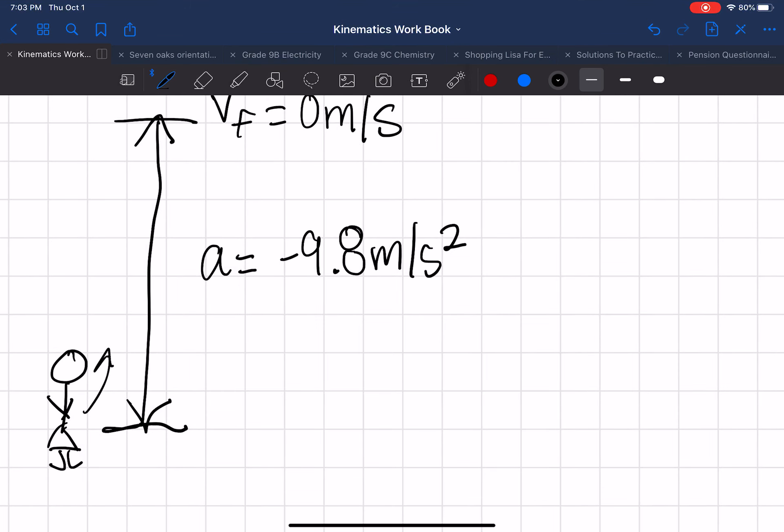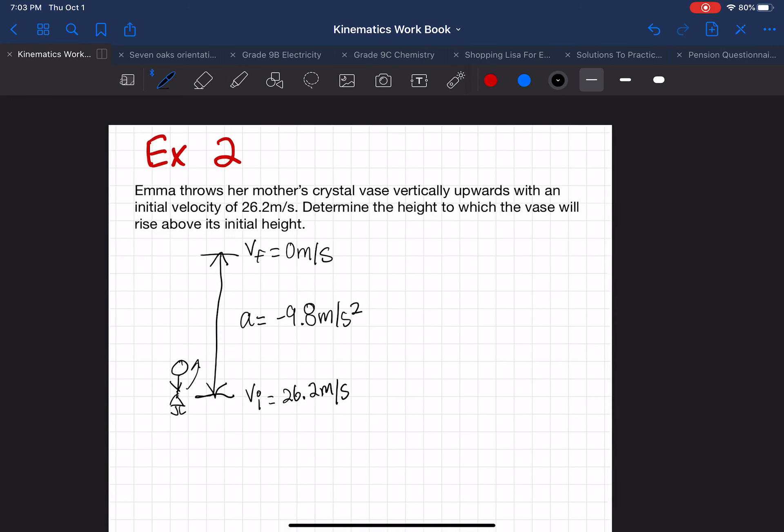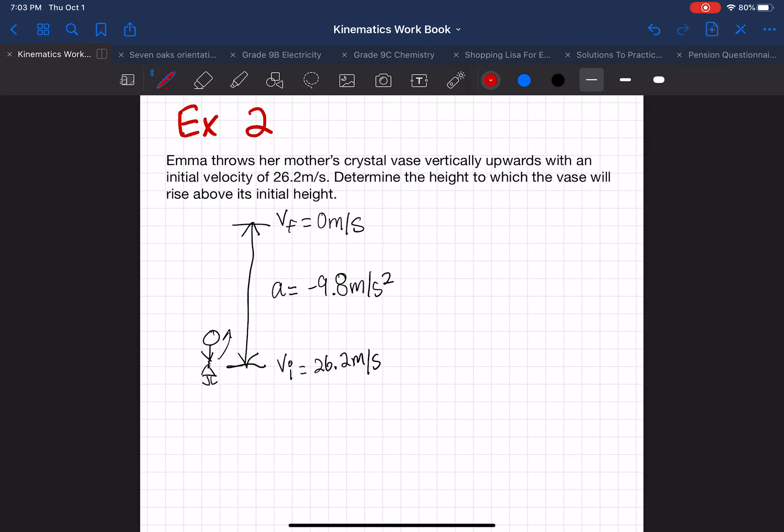Her initial velocity, so how much force did she exert to throw that glass vase? Her initial velocity, so v subscript i, equals 26.2 meters per second. And now the question is asking us, determine the height. So that height number is actually d, or the distance or displacement, we do not know. So we want to find d.